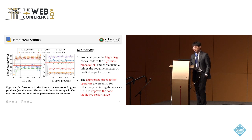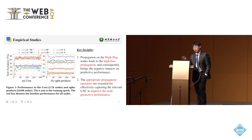For high-degree nodes, among the three options, choosing a larger kernel coefficient achieves much better performance. For low-degree nodes, choosing a smaller r value actually achieves better performance compared to the other options. This gives us two key insights: first, propagation on high-degree nodes leads to high-bias propagation, negatively impacting predictive performance; second, we need to find the most appropriate propagation operators to effectively capture relevant local node context and improve node predictive performance.